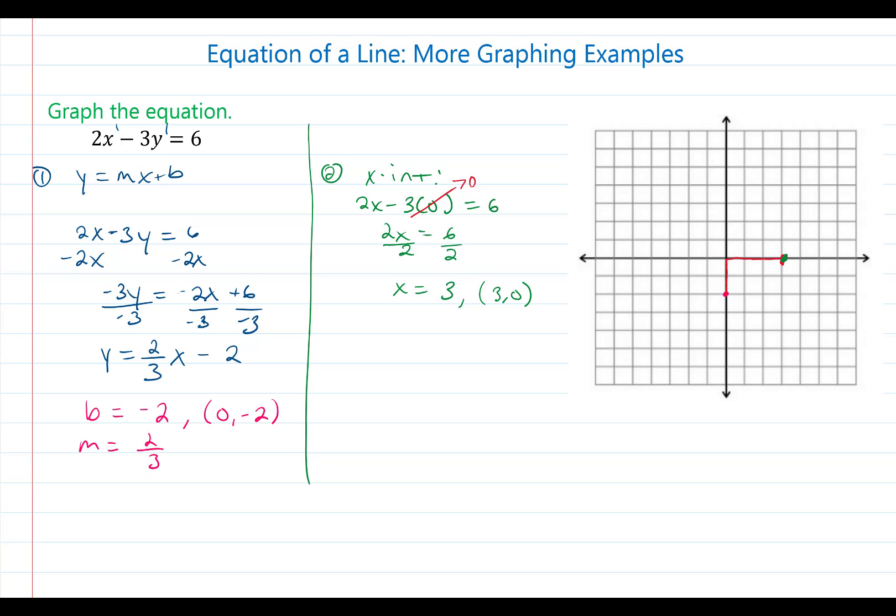We also need to find the y intercept and the y intercept can be found by replacing x with 0 and solving for y. So it will be 2 times 0 minus 3 times y is equal to 6. 2 times 0 is 0 so what we get is negative 3y equals 6, divided by negative 3 to both sides.